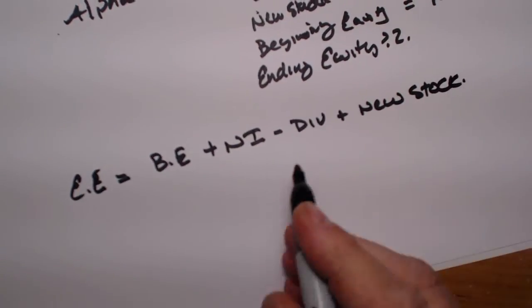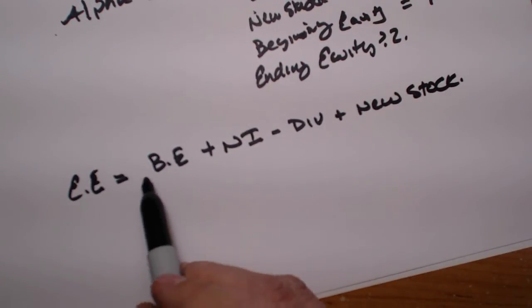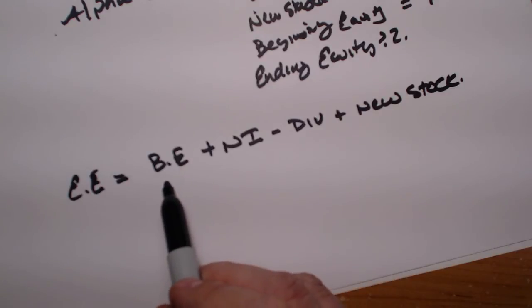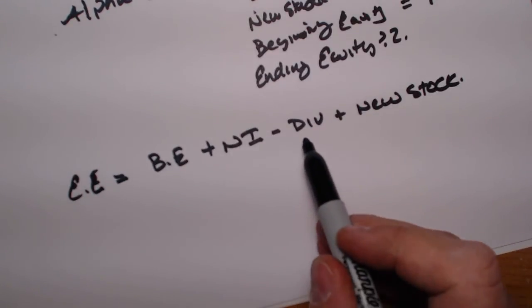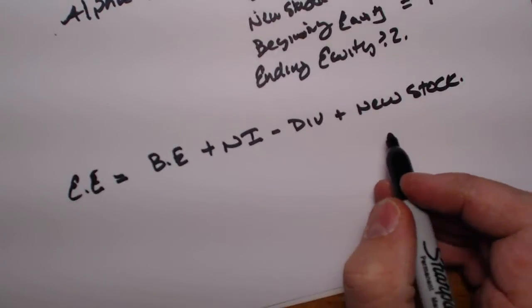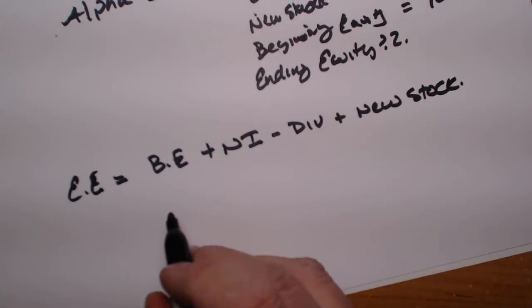So ending equity is equal to the beginning equity of when we started, plus the net income for the year, minus any dividends that we paid, plus any income from new stocks. It's a very simple equation.